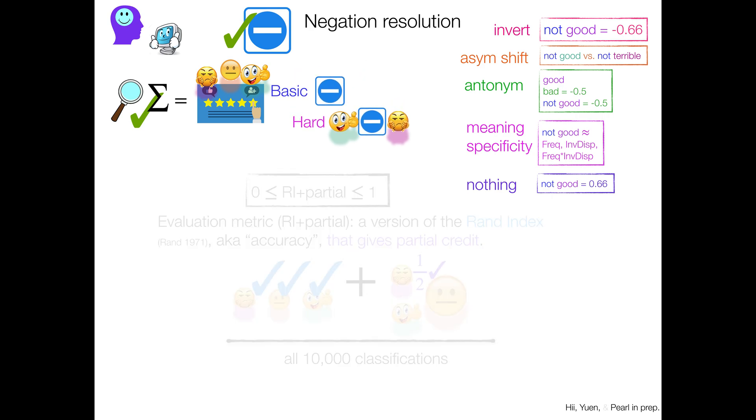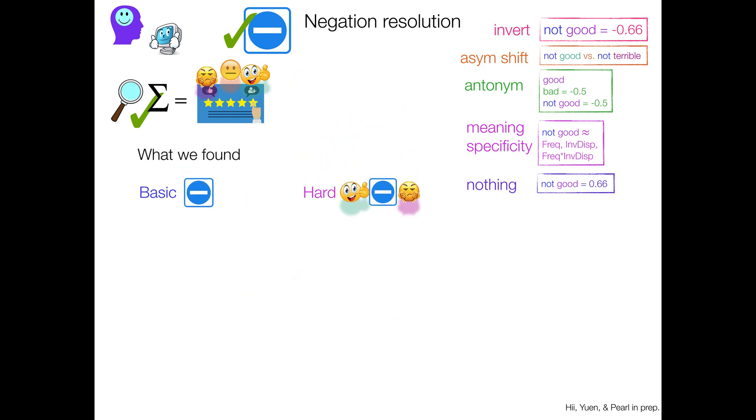So here's what we found. So on the basic data set, where it's just a review that has negation in it, the range of our RI partial thing, which ranges from 0 to 1, the scores, the success, if you will, was between 0.557 and 0.638. You know, kind of like in the 50s and 60s.